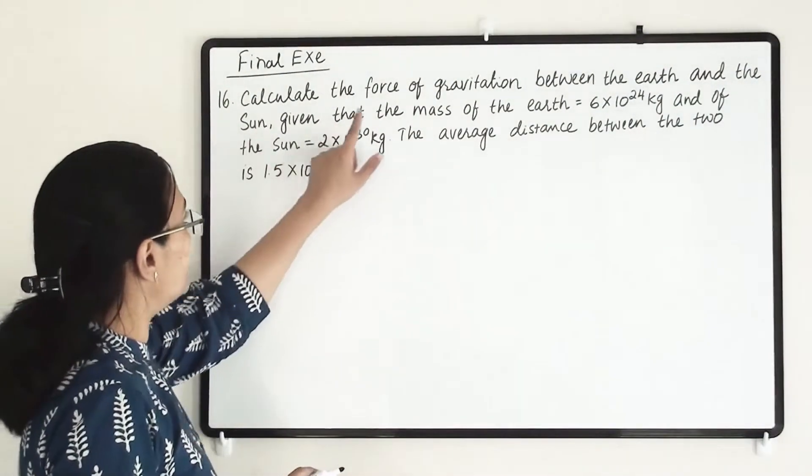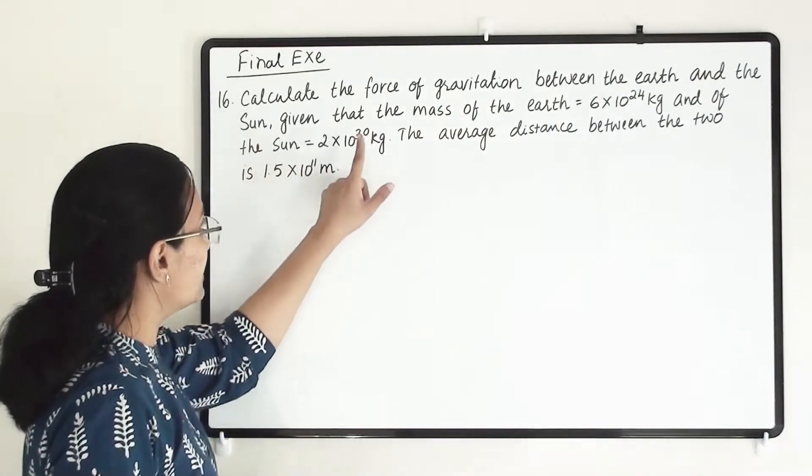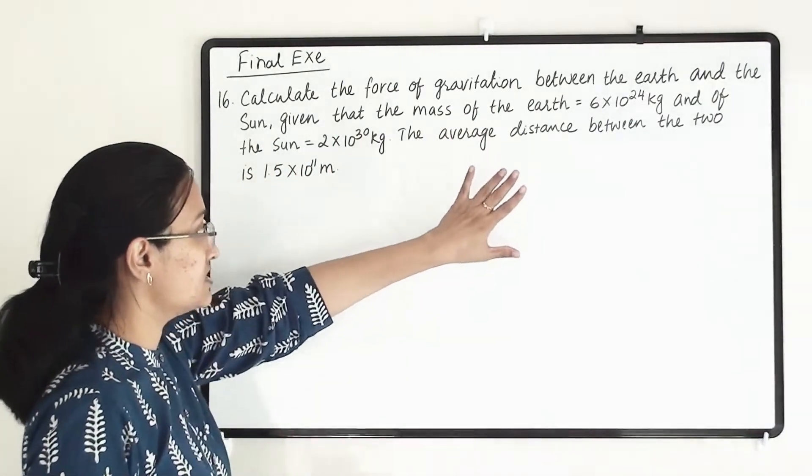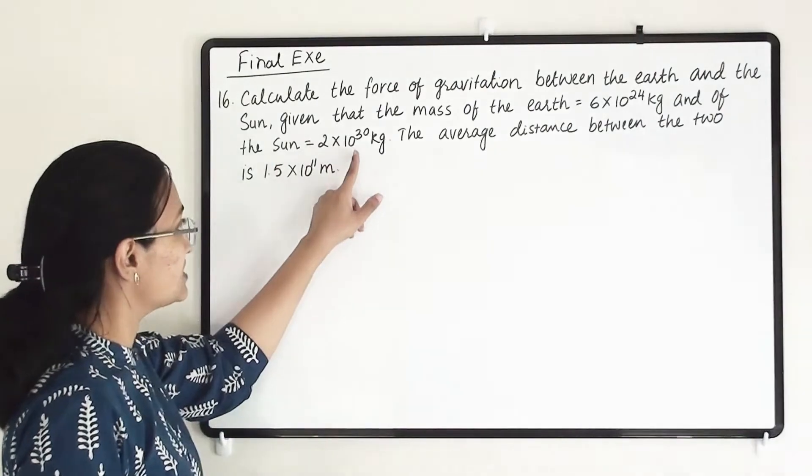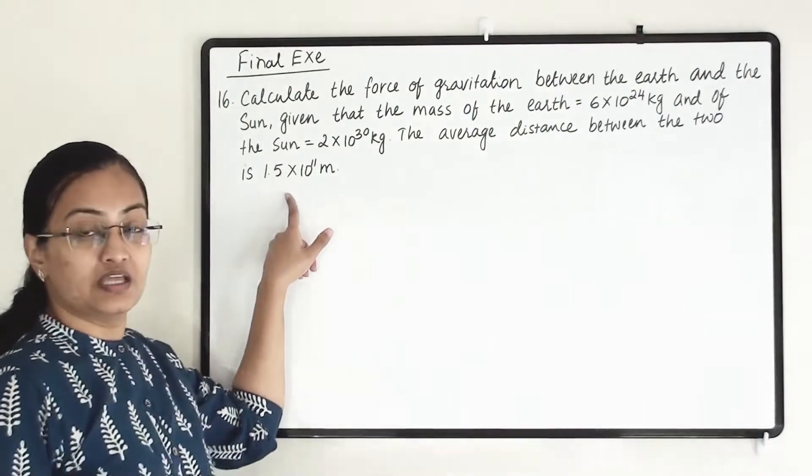The 16th question is to calculate the force of gravitation between the Earth and the Sun. Given that the mass of the Earth is 6×10²⁴ kg and that of the Sun is 2×10³⁰ kg, the average distance between the two is 1.5×10¹¹ m.